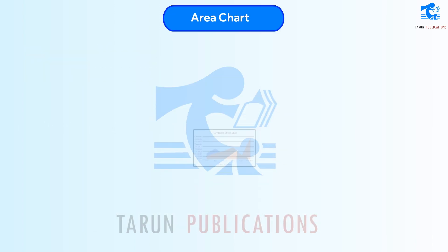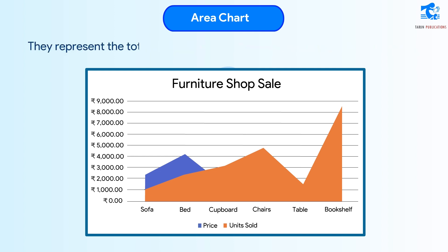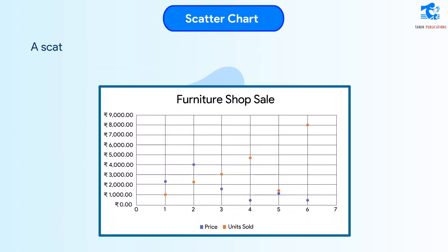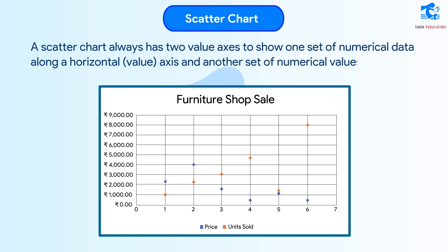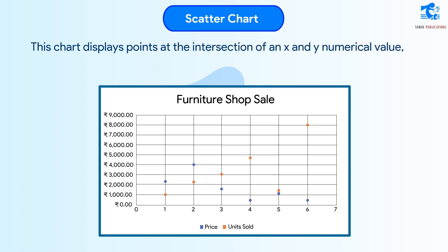Area Chart: Area charts are used to display the change over a period of time or category. They represent the total value across a trend. Scatter Chart: A scatter chart always has two value axes to show one set of numerical data along a horizontal value axis and another set of numerical values along a vertical value axis. This chart displays points at the intersection of an X and Y numerical value, combining these values into single data points.